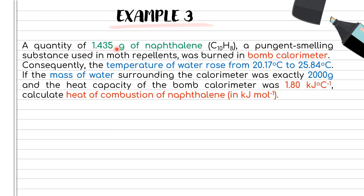Example 3: 1.435 g of naphthalene (C₁₀H₈), a pungent-smelling substance used in moth repellents, was burned in a bomb calorimeter. The temperature of the water rose from 20.17°C to 25.84°C — this gives us ΔT. The mass of water surrounding the calorimeter was exactly 2000 g.